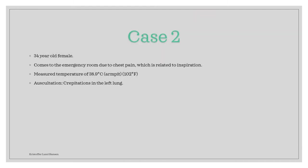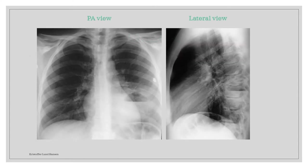The next case is about a 34-year-old woman. She arrives at the emergency room with complaints of chest pain, which worsens when she breathes. At home, she has measured a temperature of 38.9 degrees Celsius, taken in the armpit. On examination, we can hear crepitations in the left lung while auscultating. A PA view and a lateral view x-ray were taken — pause and take some time to evaluate.